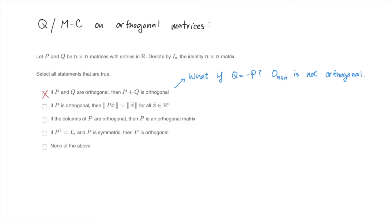On to the second one. Suppose that P is orthogonal. Is it true that the norm of P of X is equal to the norm of X for any vector X in R^n? You may recognize this from the section on properties of orthogonal matrices. In fact, this is part of theorem 9.2.7. Orthogonal matrices always preserve norm, and we've used that a lot in this course. This statement is true.